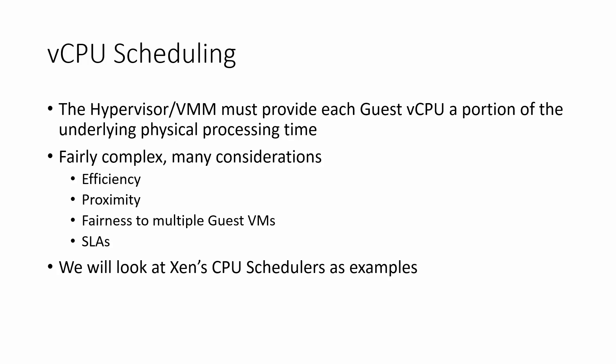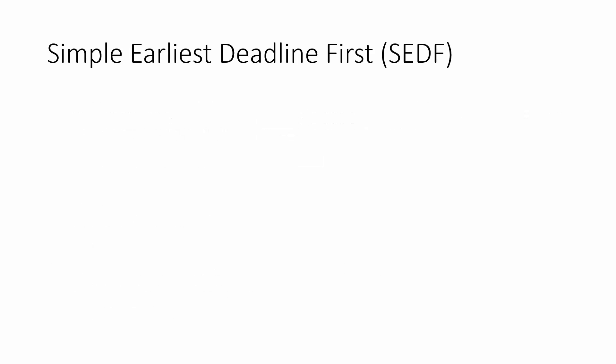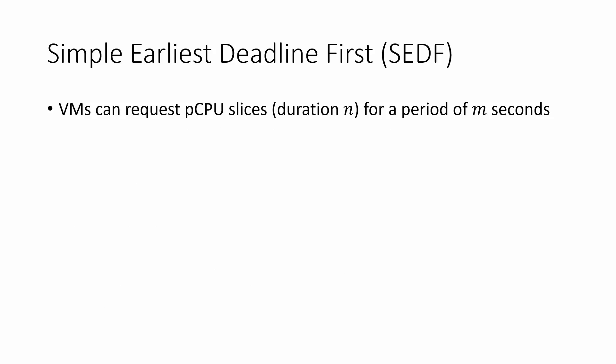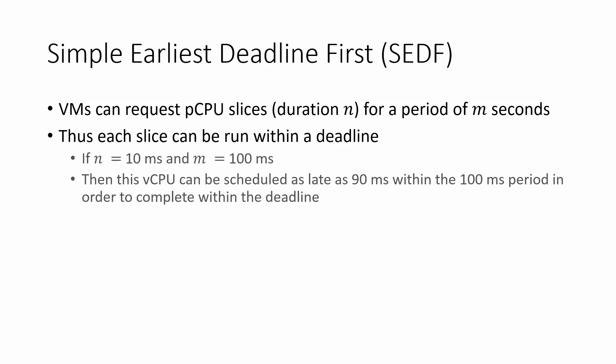The Xen CPU schedulers we'll be looking at are the Simple Earliest Deadline First, or SEDF, scheduler and Xen's credit scheduler. The SEDF is a simple scheduler where virtual machines can request physical CPU slices of duration n for a period of m seconds, so each slice can be run within a deadline. For example, if n equals 10 milliseconds and m equals 100 milliseconds, then the vCPU can be scheduled as late as 90 milliseconds within the 100 millisecond period in order to complete within the deadline.